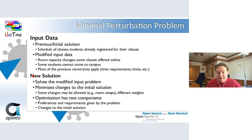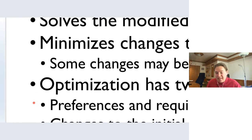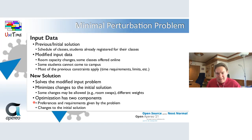In the end, the optimization has two components: the preferences and requirements given by the problem — just like when the solver is run normally — plus a perturbation penalty component that measures and tries to minimize changes to the initial solution.